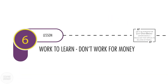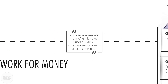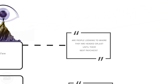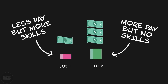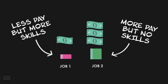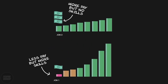Lesson 6: Work to learn, don't work for money. Job is an acronym for just over broke — unfortunately, that applies to millions of people. Are people looking to where they're headed or just until their next paycheck? If you need to get a job and work for someone, work to learn new skills. Most people only focus on short-term benefits and will take a better paying job that teaches them nothing over a job that will give them the skills to become successful in the long run. When you're first getting started, value learning new skills over money and job security.